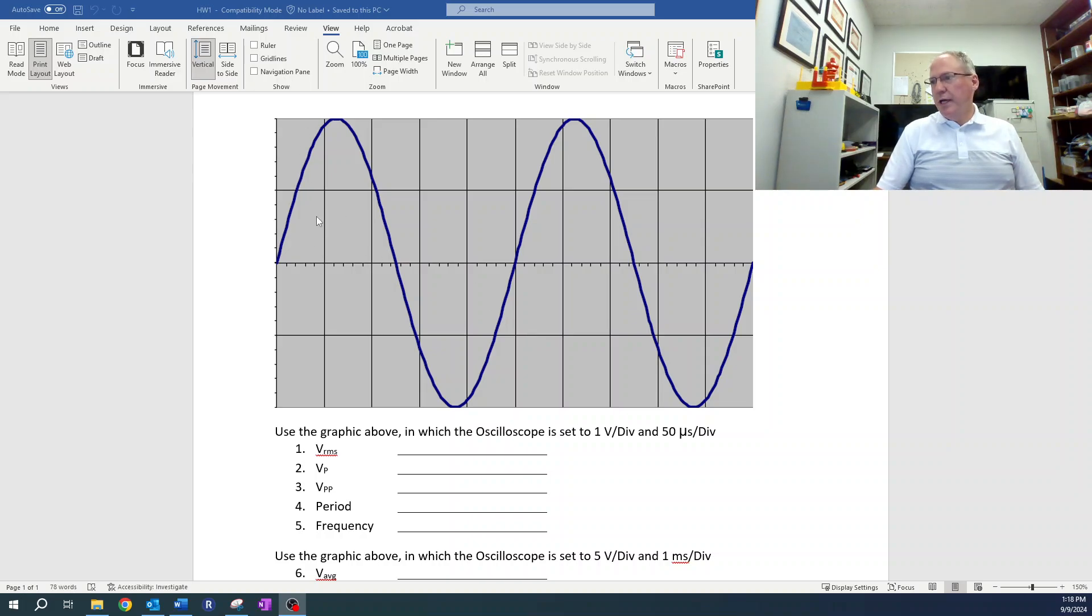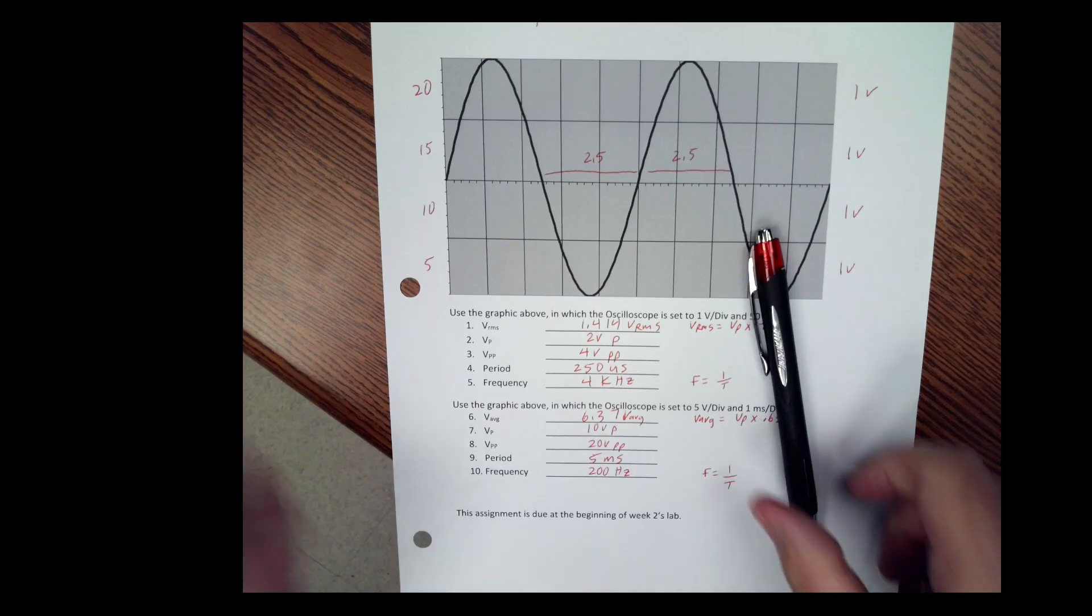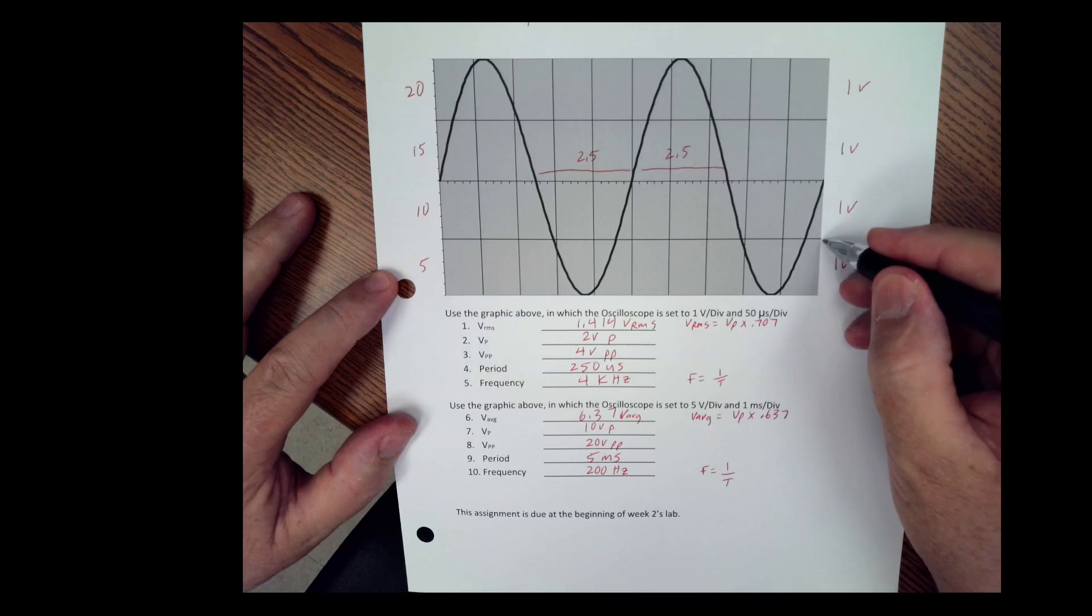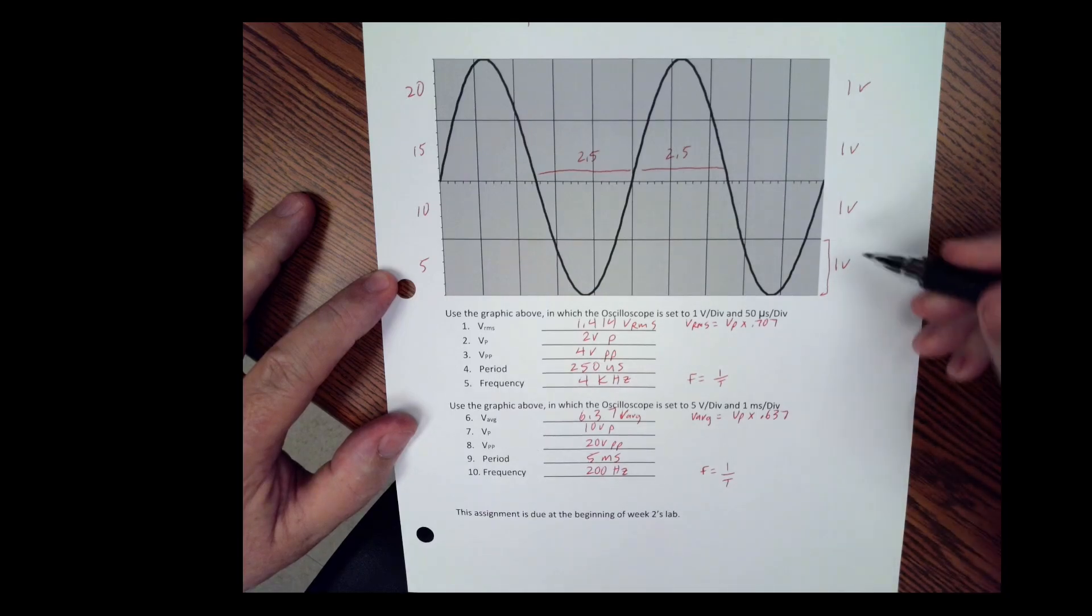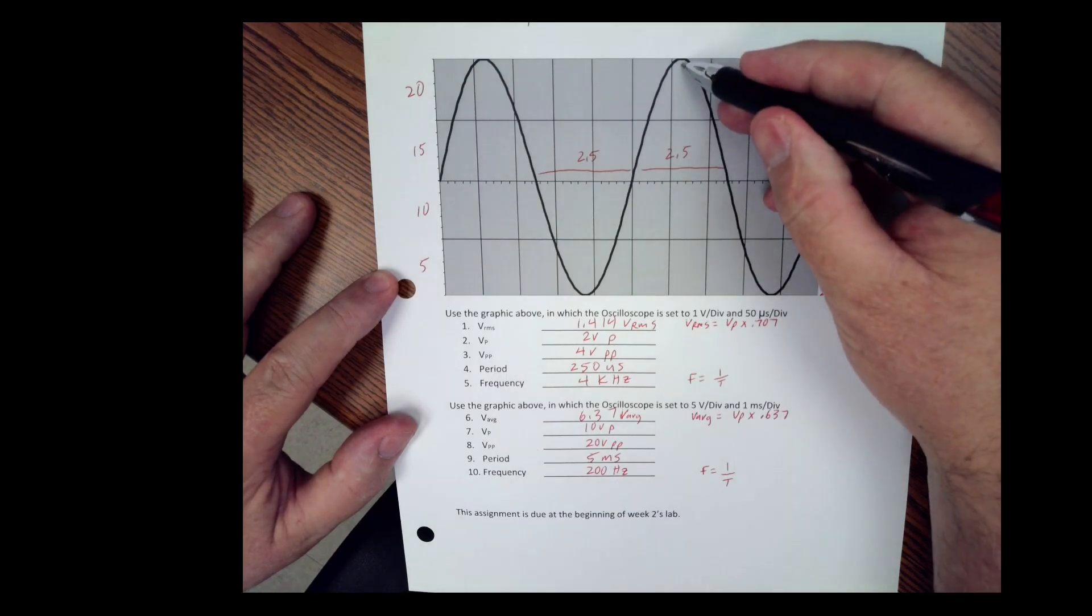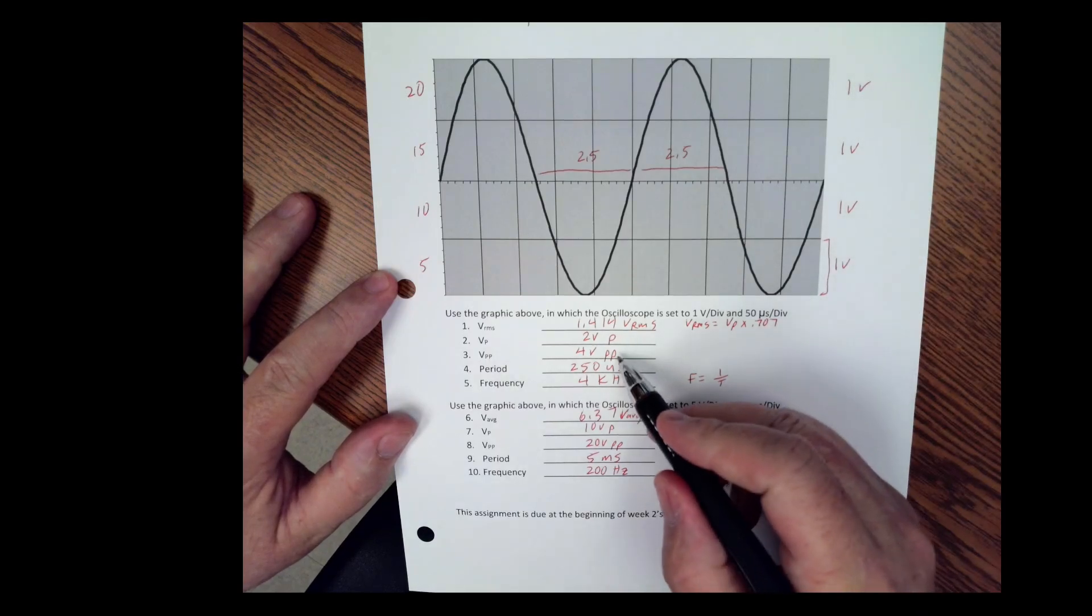All right, so if we look at this over here, it means that each one of these blocks here is one volt. So if you just look at the bottom of the peak to the top of the peak, it's one, two, three, four. So the voltage peak-to-peak is four volts peak-to-peak.